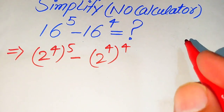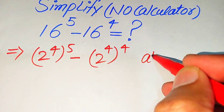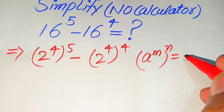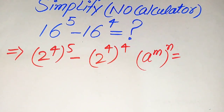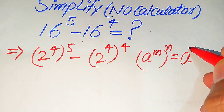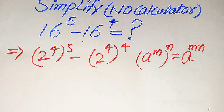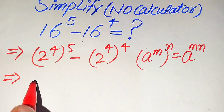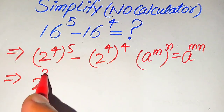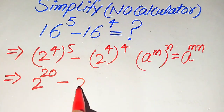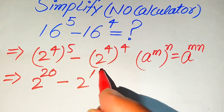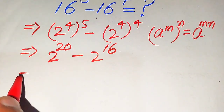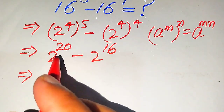Now we use the exponent law: a to the power of m, to the power of n, equals a to the power of m multiplied by n. Applying this rule, the expression becomes 2 to the power of 4 times 5, which is 2^20, minus 2 to the power of 4 times 4, which is 2^16.